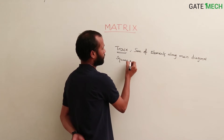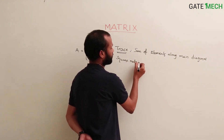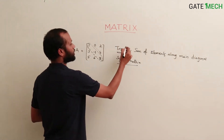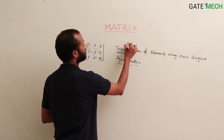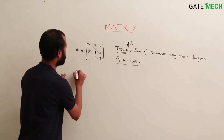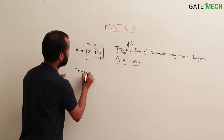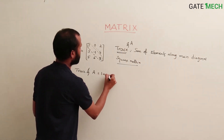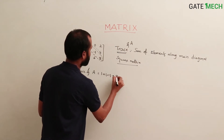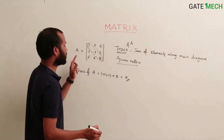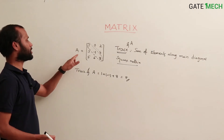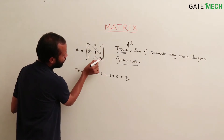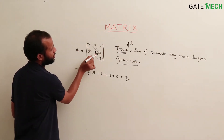What is the trace of a matrix? We can call it trace of A. Trace of matrix A equals 1 plus minus 1 plus 8, which equals 8. So the trace of A is 8.